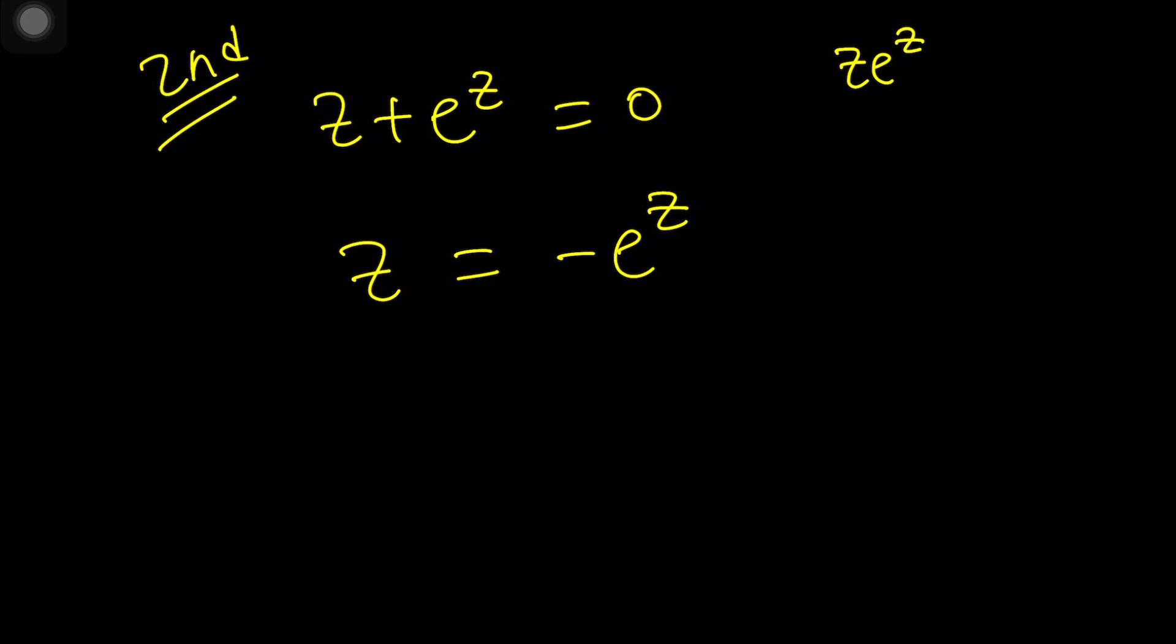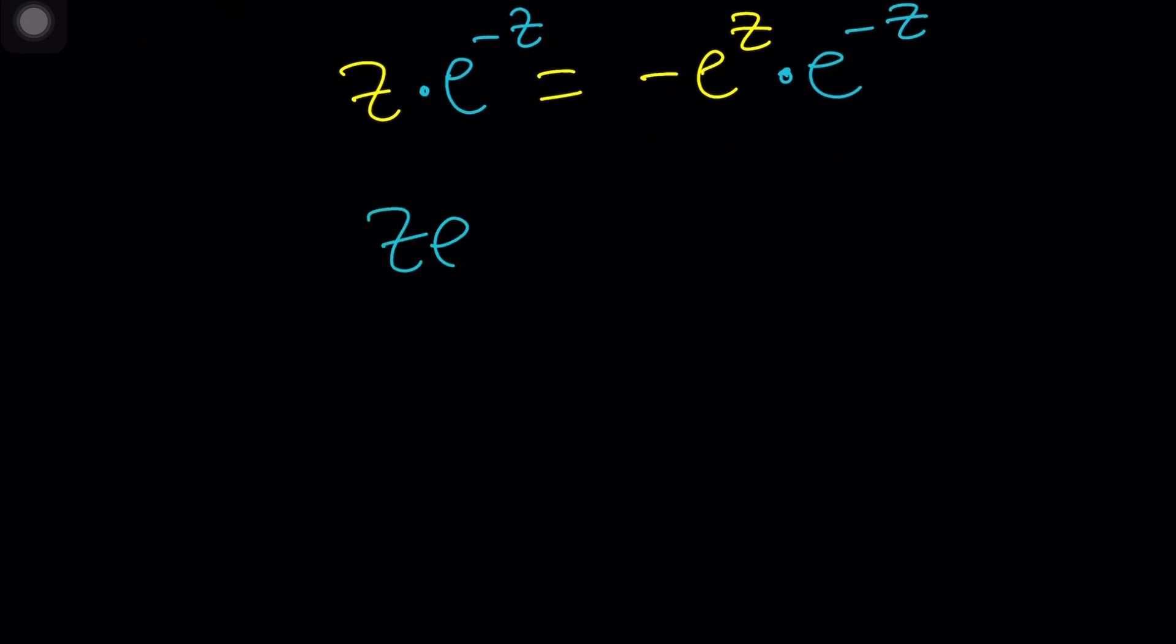But we can get close. How? Multiply both sides by E to the power negative Z. And then you should get the answer. So let's space it out a little bit. And now we have multiply by E to the negative Z and E to the negative Z. Great. So now on the left hand side, I got Z E to the negative Z which is kind of close to T E to the T. We'll get there. And here these two cancel out leaving us with negative 1.